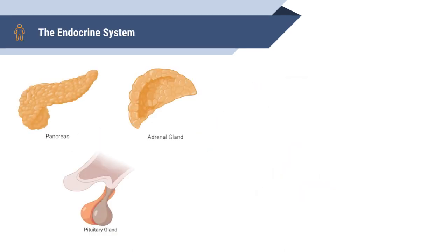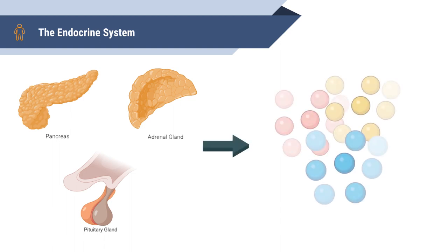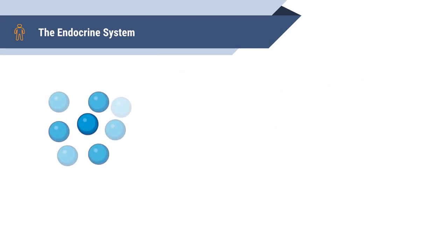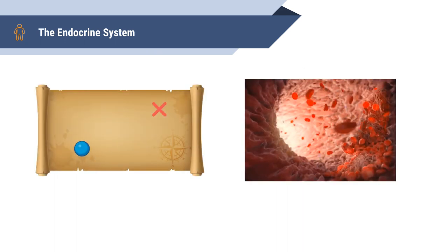The endocrine system is a series of glands that produce and secrete hormones that the body uses for a wide range of functions. These hormones are guided to the target cell's receptors, which in the case of the endocrine system are usually located on the cell surface. The endocrine system allows for long-distance signaling, reaching cells that are far away.